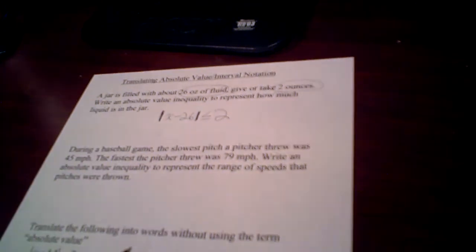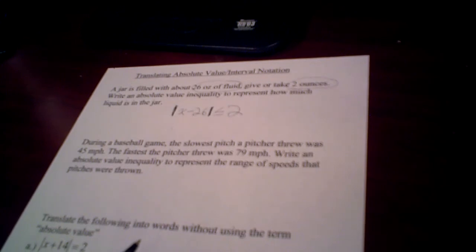Now on the second type of problem, they give you a maximum and a minimum. They basically are giving you the answers. So on this one it says, during a baseball game, the slowest pitch a pitcher threw was 45 miles per hour. The fastest the pitcher threw was 79 miles per hour. Write an absolute value inequality to represent the range of speeds that pitches were thrown.